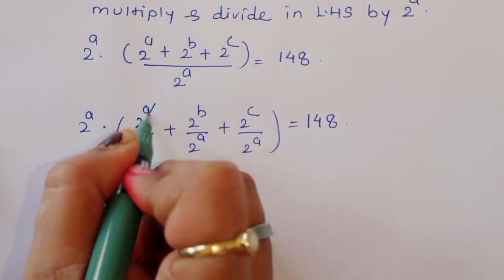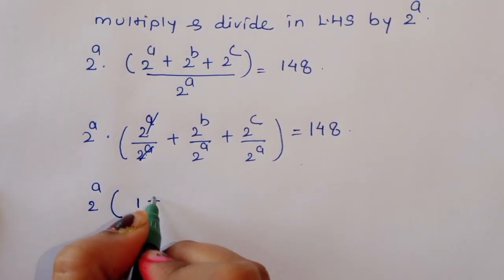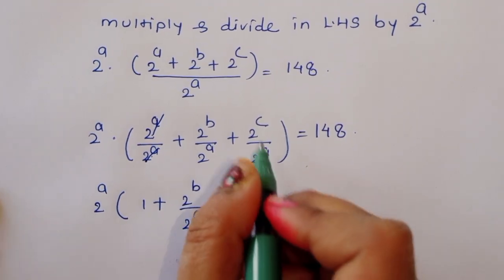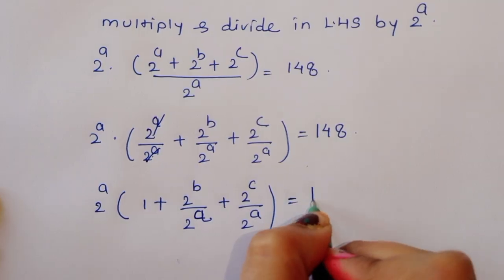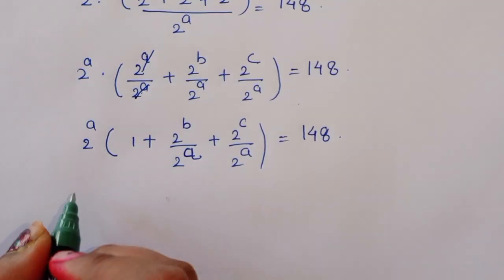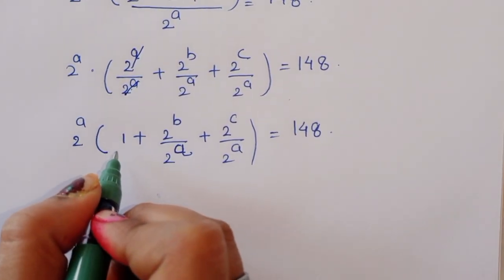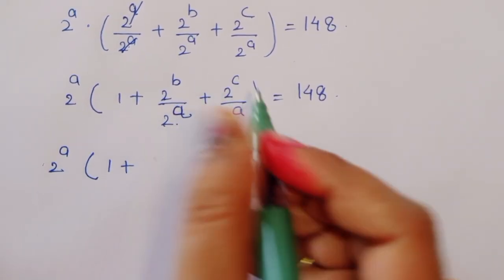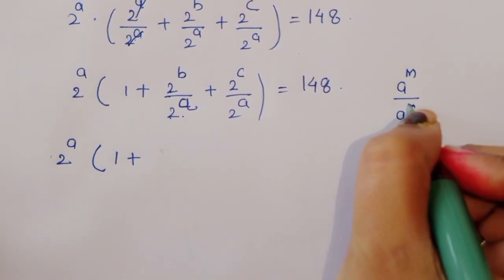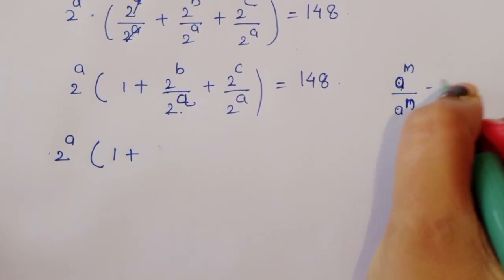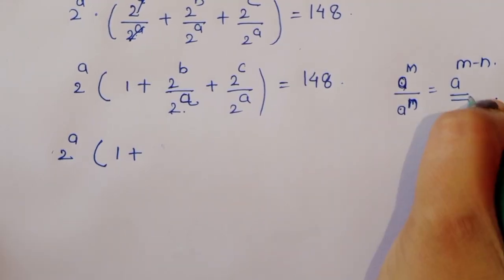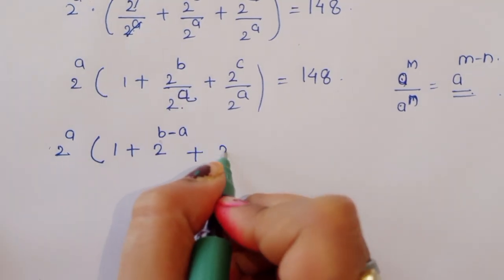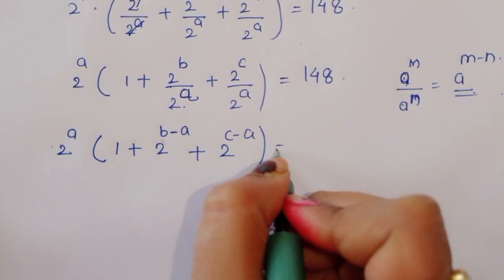Now 2 power A divided by 2 power A cancels. Using the formula A power M divided by A power N equals A power M minus N, since the base is the same, we can write: 2 power A times (1 plus 2 power B minus A plus 2 power C minus A) is equal to 148.